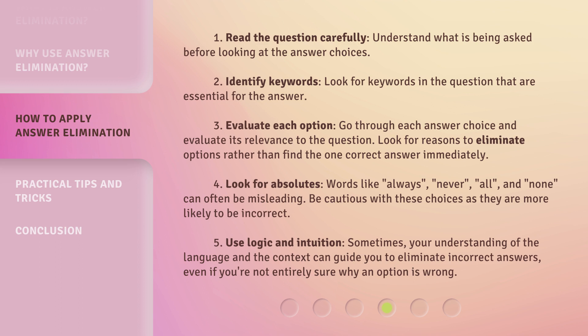Step 4: Look for absolutes. Words like always, never, all, and none can often be misleading — be cautious with these choices as they are more likely to be incorrect. Step 5: Use logic and intuition. Sometimes your understanding of the language and the context can guide you to eliminate incorrect answers, even if you're not entirely sure why an option is wrong.